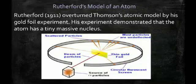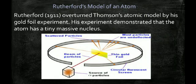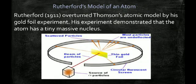The next model was Rutherford's, which was very important because he performed an experiment first and then drew conclusions. In this experiment, alpha particles (doubly charged helium) were emitted from a source and directed at a thin gold foil. Gold was chosen because it is the most malleable metal, allowing the thinnest possible layer. It was observed that most alpha particles passed straight through the foil without any deflection, as seen on the circular fluorescent screen.